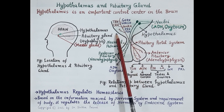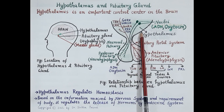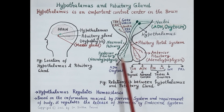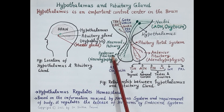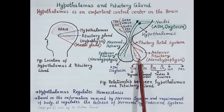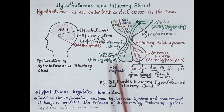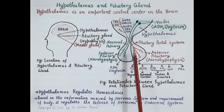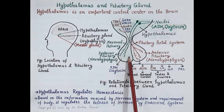Hypothalamus, shown here in green, is made up of nervous tissue. The pituitary gland consists of two parts: anterior pituitary and posterior pituitary. Anterior pituitary or adenohypophysis is made up of glandular tissue, while posterior pituitary or neurohypophysis is made up of nervous tissue. So both hypothalamus and posterior pituitary are made up of nervous tissue.